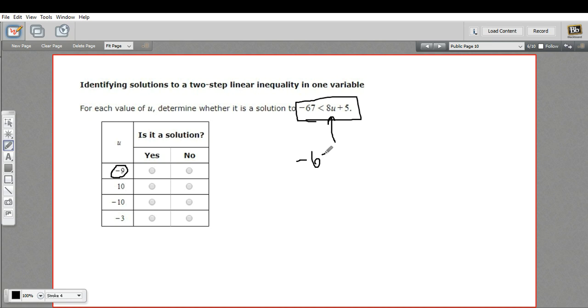So let's try that. Negative 67 is less than 8 times negative 9, plugging in that first value for u, and then plus 5. So negative 67 is less than 8 times negative 9 would be negative 72 plus 5.